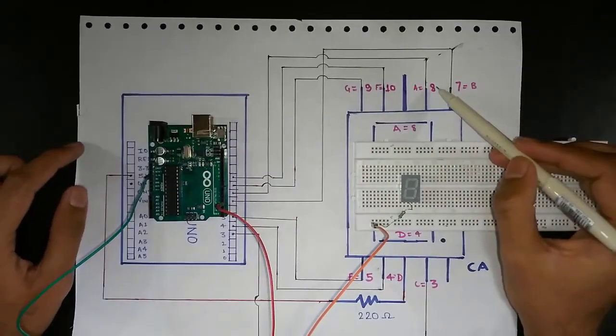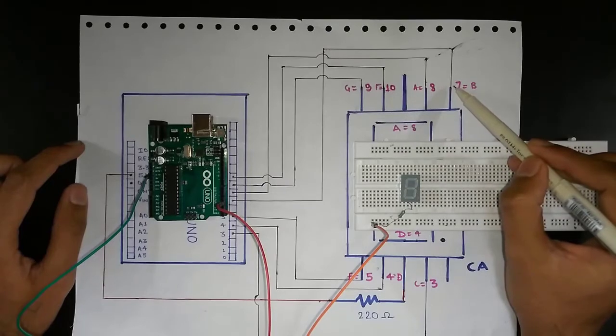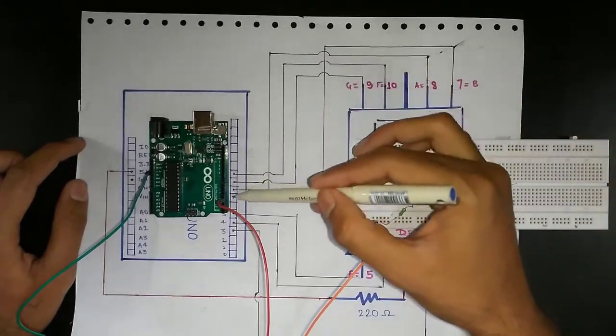Now as you can see in the circuit diagram, all the pins above are connected to various ports in the Arduino.